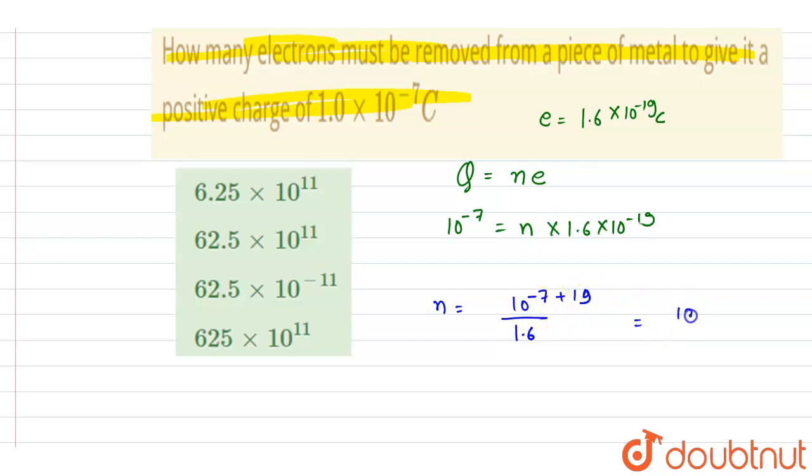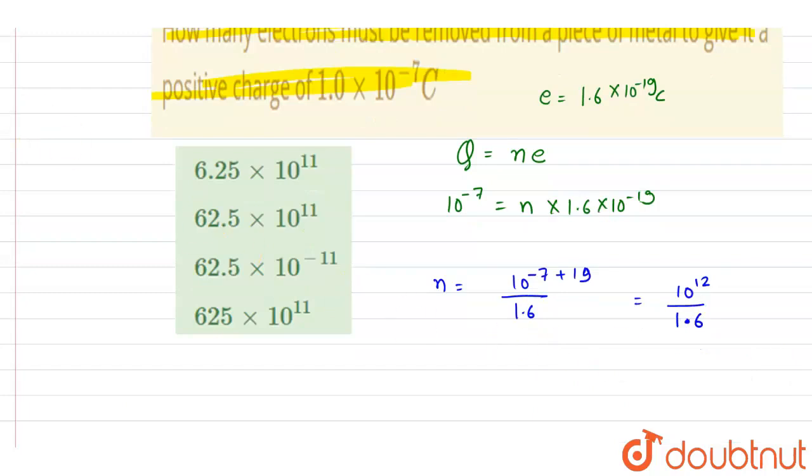19 minus 7, it is 12. So it will be 10 to the power 12 in division 1.6. Now you can just solve it. By 1.6, it is 10 to the power 11.